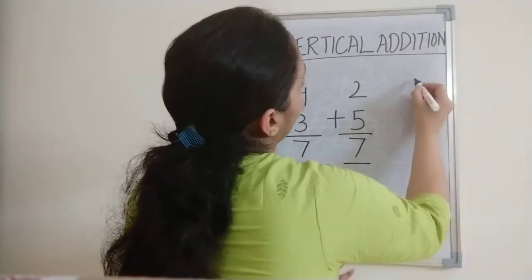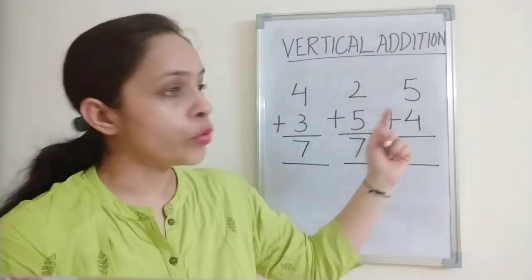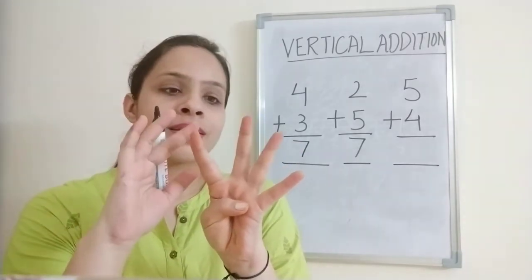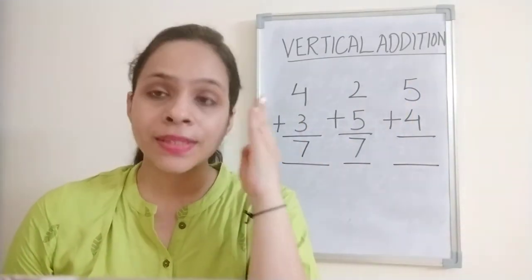Let's take one more example: 5 plus 4. We will keep 5 in our mind and how many fingers, we have to take 4 steps ahead. These are the 4 fingers. What's the next number after 5? 6, 7, 8, 9. Number 5 is in your mind and how many steps you will go ahead? 4 steps: 6, 7, 8, 9.